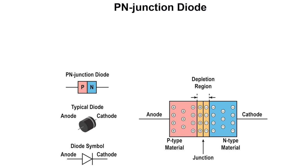An N-type semiconductor material has electrons, represented as negative charges, as the current carriers, while the P-type has holes, represented as positive charges, as the current carriers.